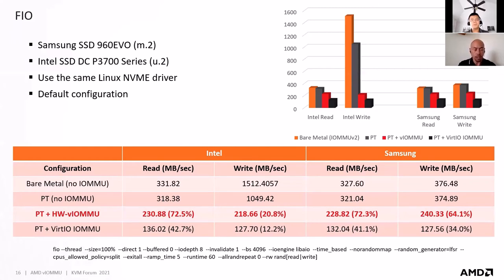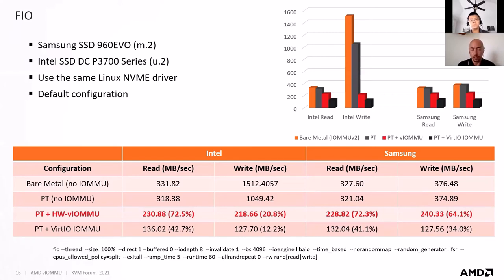When comparing the virtualization configurations — no IOMMU, hardware VIOMMU, and VirtIO IOMMU — we see that with hardware VIOMMU we get around 65% to 73% of baseline performance, while VirtIO IOMMU achieves about 34% to 42%. Looking across the board, we appear to be hitting a performance bottleneck at around 230 megabytes per second for hardware-assisted VIOMMU. We have not done further investigation on this, but it is a good data point for this benchmark.